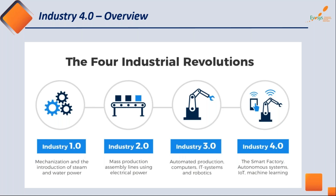Industry 2.0 saw mass production and assembly lines come into the picture using electrical power. The automobile industry majorly utilized this version, manufacturing a large number of vehicles per day with the same type of operations on production lines. Without electricity involved in production, this could not have been achieved.